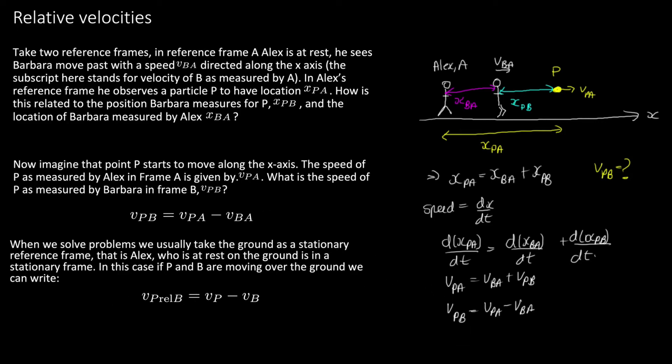Now when we solve problems we usually take the ground as the stationary reference frame, so Alex is stationary on the ground. We could replace Alex here with the ground. We don't always show this subscript for the ground because it just comes up so much. So often we can write this as v of p relative to b. This is v of point p relative to Barbara, given by the velocity of p (this is assumed to be the velocity of p in the ground's reference frame) minus the velocity of b. And these are velocities, so it's a good idea to mark them as velocities with a little squiggle underneath them.